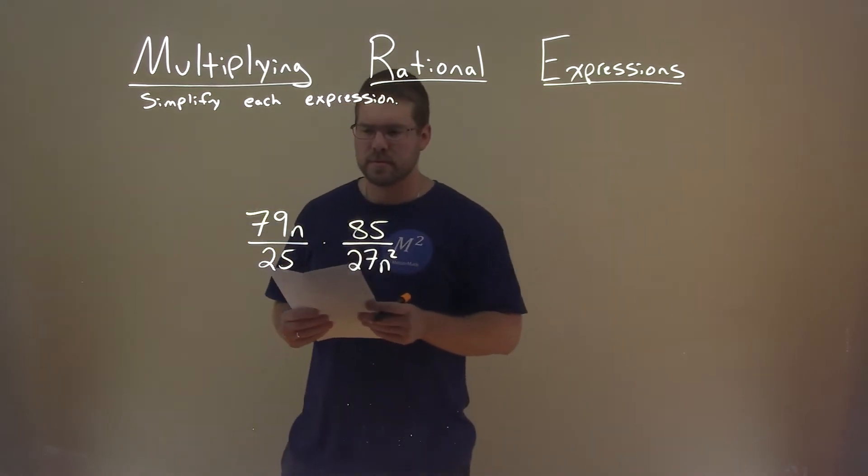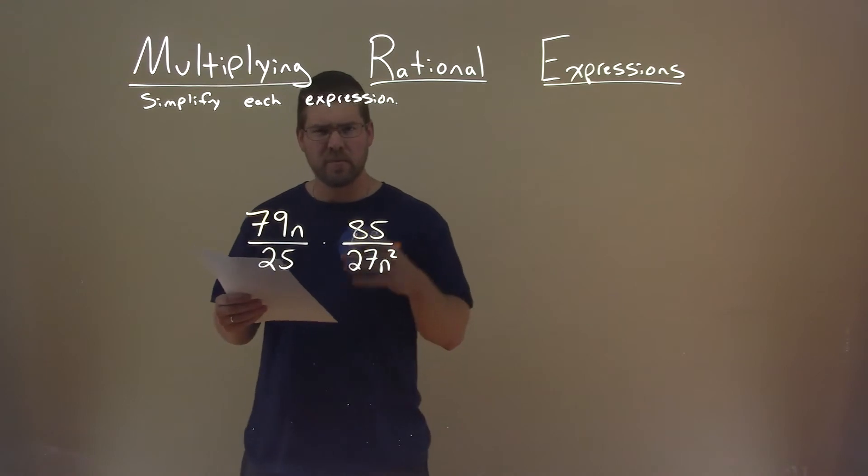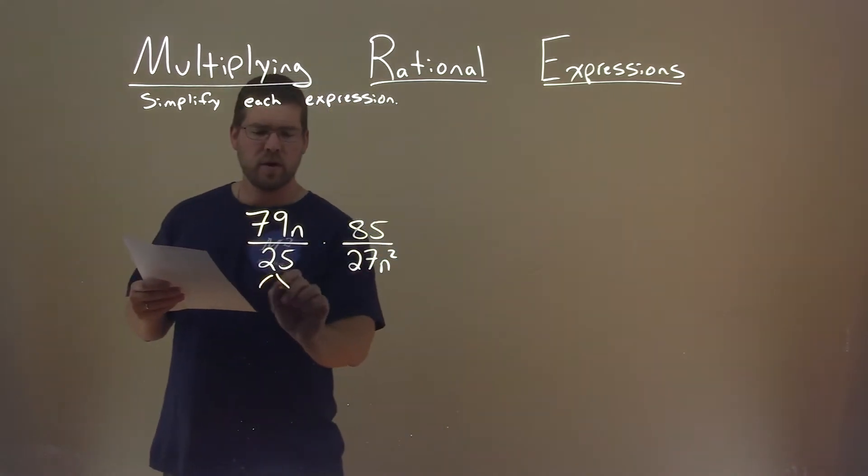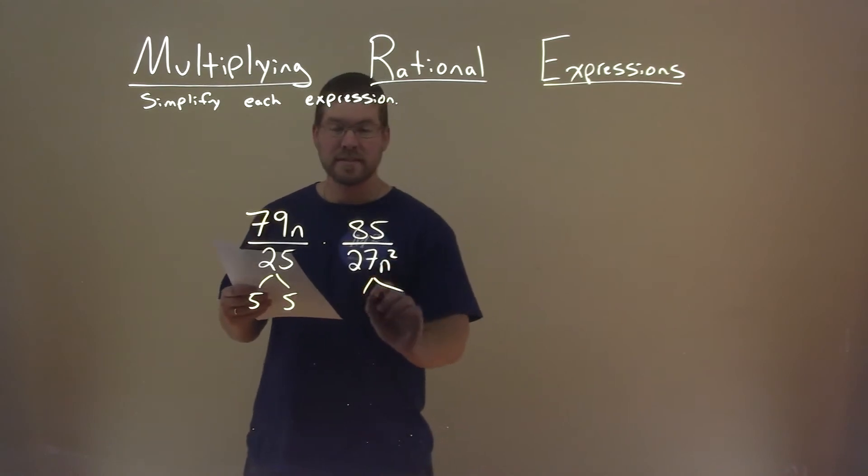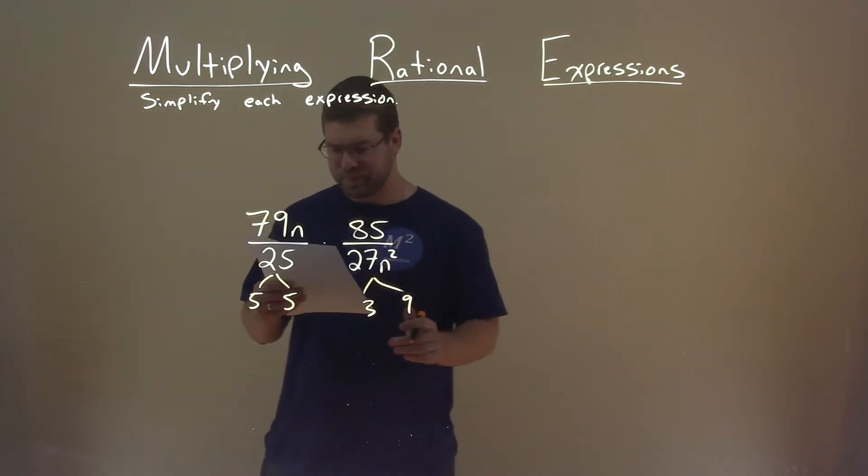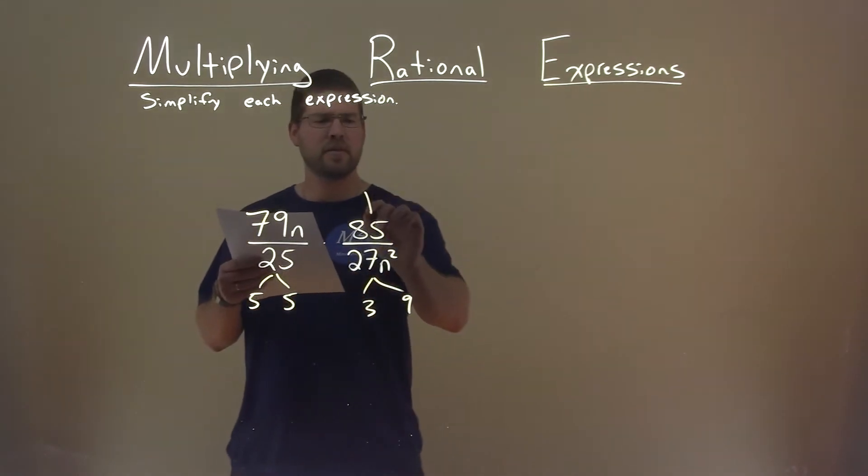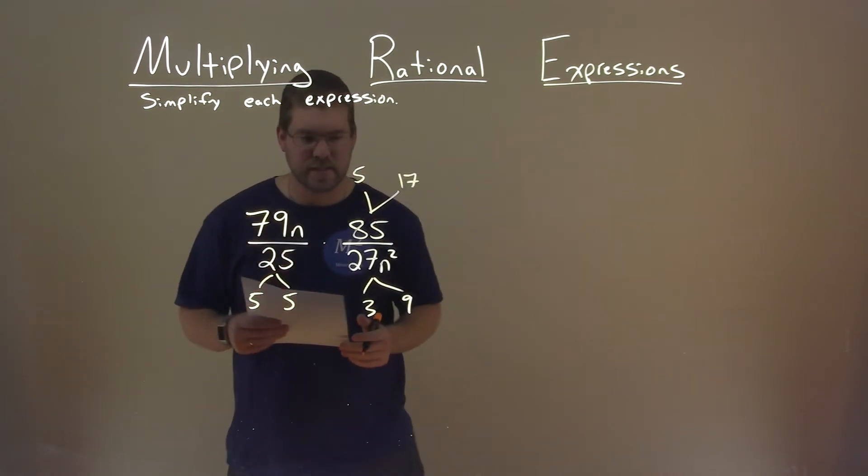So let's break down our numbers. Well, 79 is a prime number. It doesn't really break down. 25 is 5 times 5. 27 is 3 times 9. And 85 is 5 times 17.